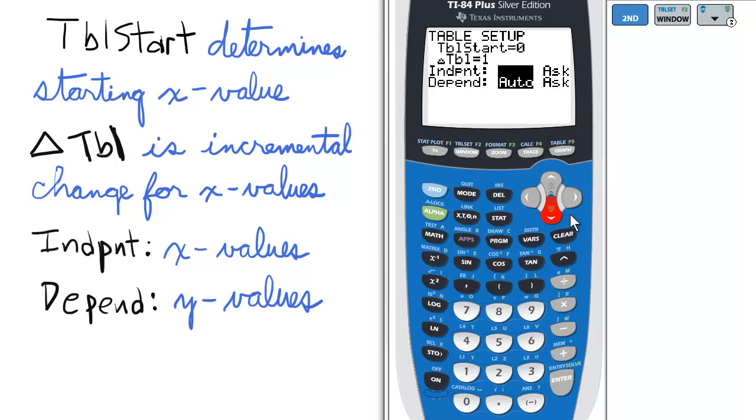Otherwise, in ask mode, we will enter the value we want to display for the x value. This is handy if you want to know only specific x values.